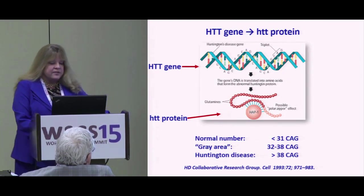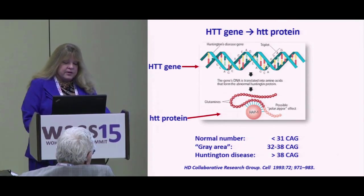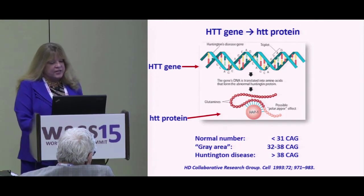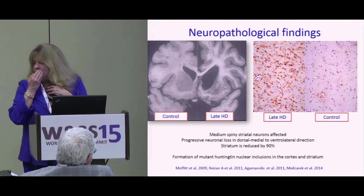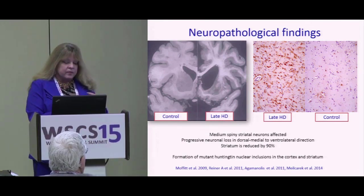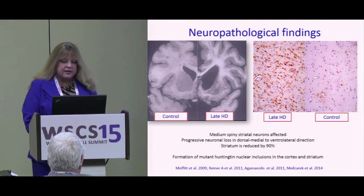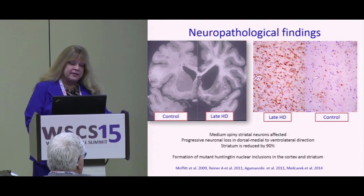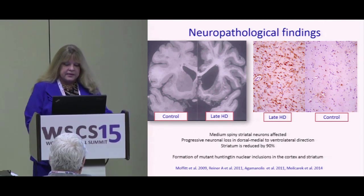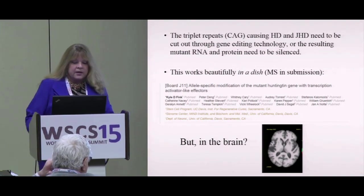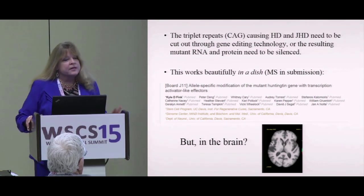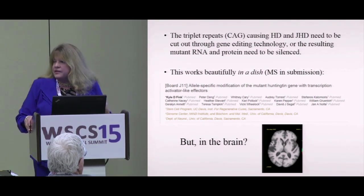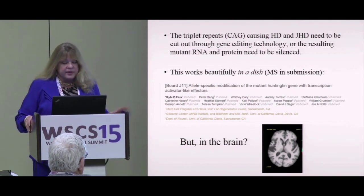The Huntington's gene is an attractive target. Under 31 CAG repeats is normal, 32 to 38 is a gray area, and Huntington's disease occurs over 38 CAG repeats. This produces a horrible mutant protein that clogs the cells, causes inclusions that kill the neurons, and causes striatal neuron loss in late HD. So the triplet repeats causing HD and juvenile HD need to be cut out through gene editing down to a normal size, or the resulting mutant RNA and protein need to be silenced — one of those two strategies to impact this deadly, always fatal neurological disease with no other treatments.